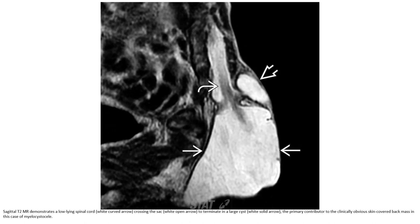This is a sagittal T2 image demonstrating the low-lying spinal cord crossing the site to terminate in a lysis. In this case, the primary contributor to the clinically obvious skin-covered back mass is this case of myelocystocele.